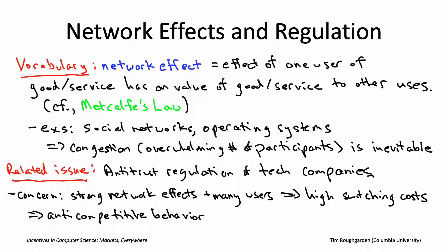That was exactly the government's charge in the U.S. versus Microsoft case about 20 years ago. The government claimed that Microsoft was exploiting its dominance in the operating systems market to extend that dominance to the internet browser market by bundling Internet Explorer — Microsoft's browser — with Microsoft's operating system, without necessarily innovating or offering a superior product. And in recent years, Google has also been embroiled in similar situations, accused of exploiting its dominance in search to conquer other sectors. The European Union fined Google about $5 billion for anti-competitive behavior. The U.S. has not taken any action, at least as of yet.